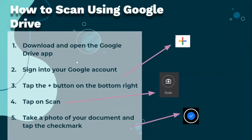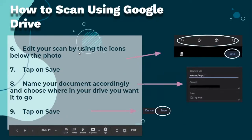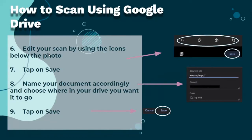Now we're going to talk about how to scan using Google Drive. Download and open the Google Drive app and sign in to your Google account. Tap the plus button on the bottom right, then tap on Scan. Take a photo of your document and tap the checkmark. You can edit the scan using the icons below the photo, then tap Save. Name your document accordingly, choose where in your drive you want it to go, and tap Save.